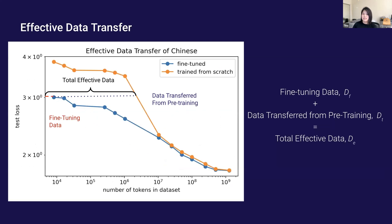The key metric I wanted to measure was effective data transfer — what that looks like when training from English text to Chinese, Spanish, and German. Effective data transfer is measured as the amount of fine-tuning data needed to reach a given loss when using a pre-trained model, compared to the amount of additional data needed to reach that same loss when training from scratch. It's important to note that the amount of data transfer from pre-training gets smaller as we increase the dataset size, and eventually converges around 10 million tokens.